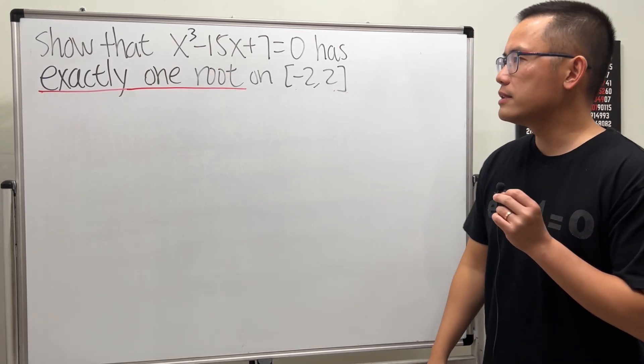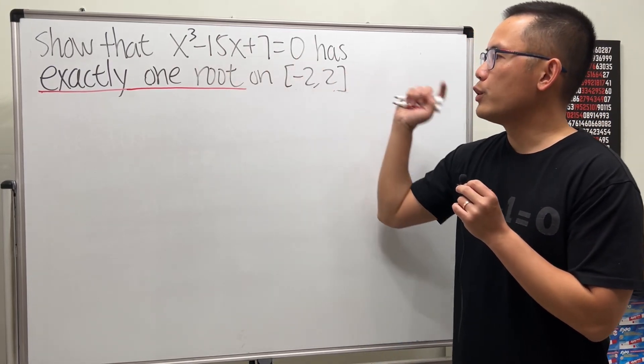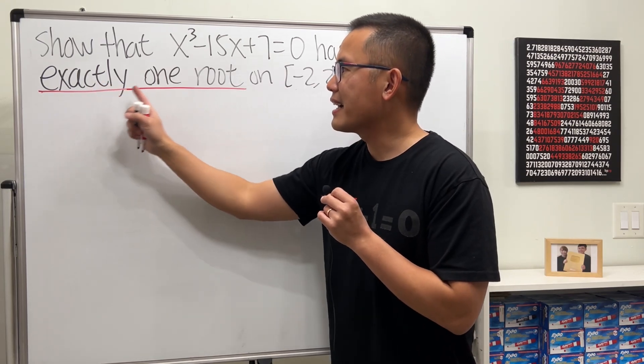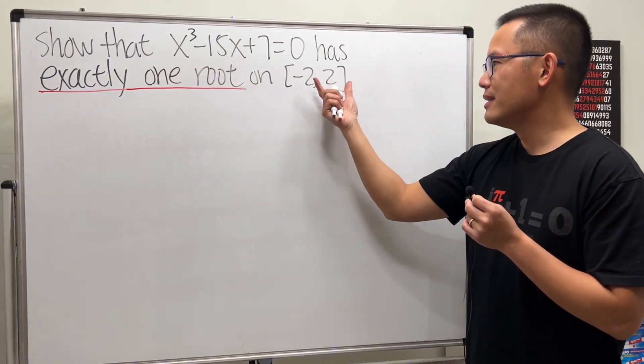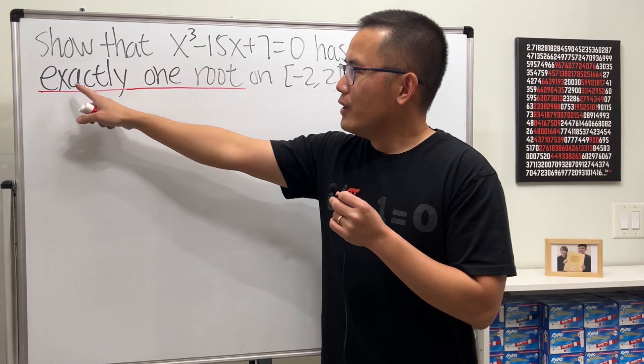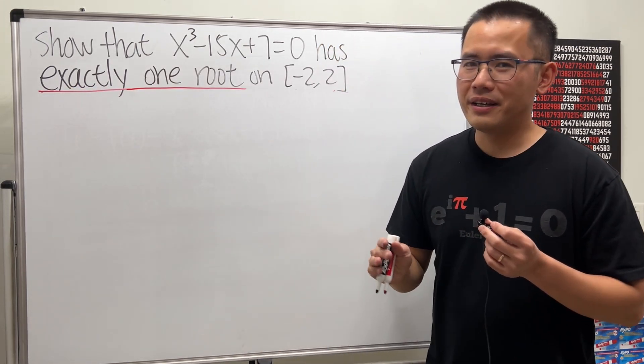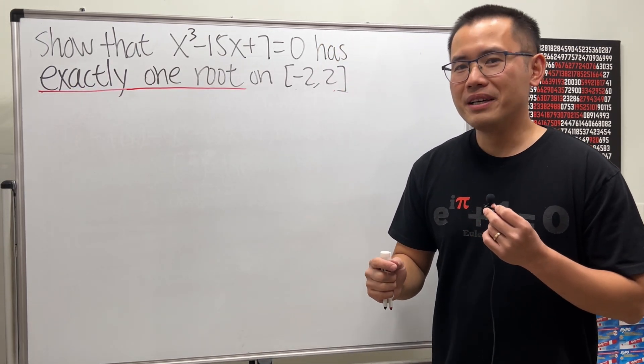Today let's see how we can use calculus to show that this cubic equation has exactly one root on this interval. Now for exactly one root, this takes the most amount of work because we have to do two parts.